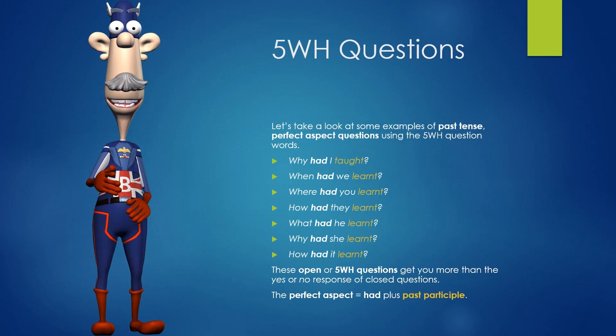Five WH Questions. Let's take a look at some examples of past tense perfect aspect questions using the five WH question words. Why had I taught? When had we learnt? Where had you learnt? How had they learnt? What had he learnt? Why had she learnt? How had it learnt? These open or 5 WH questions get you more than the yes or no response of closed questions. The perfect aspect is had plus past participle.